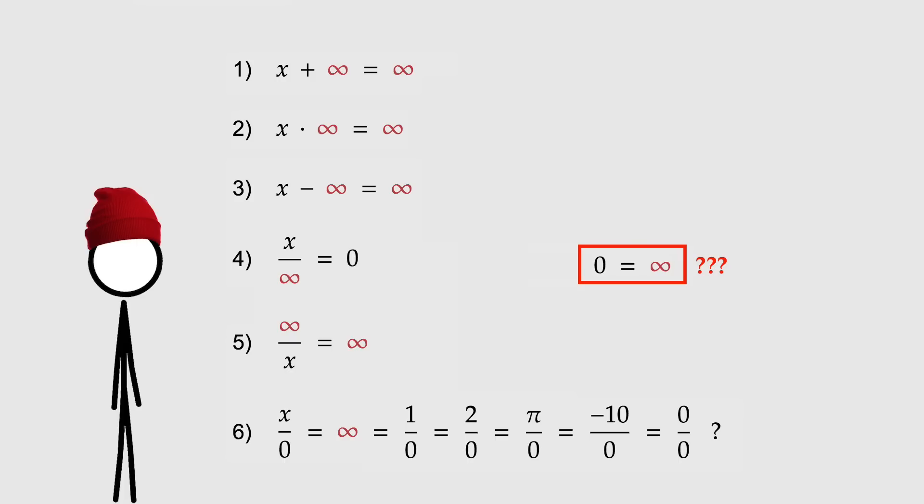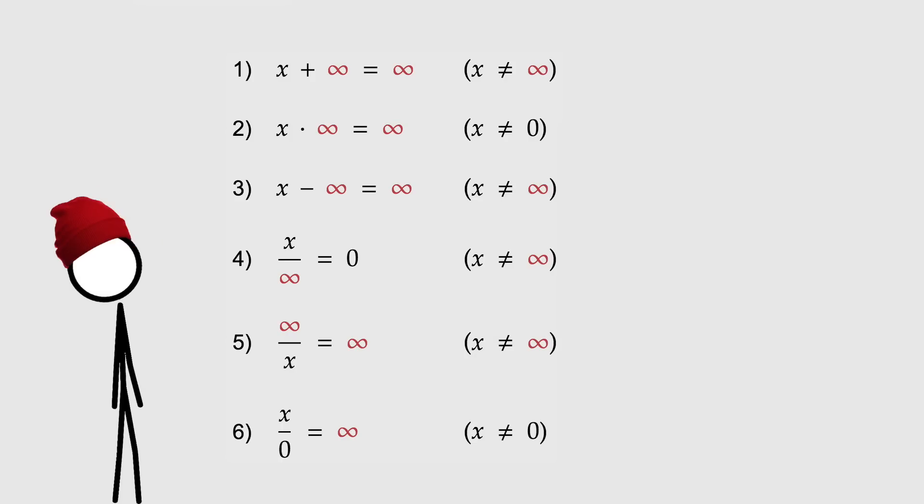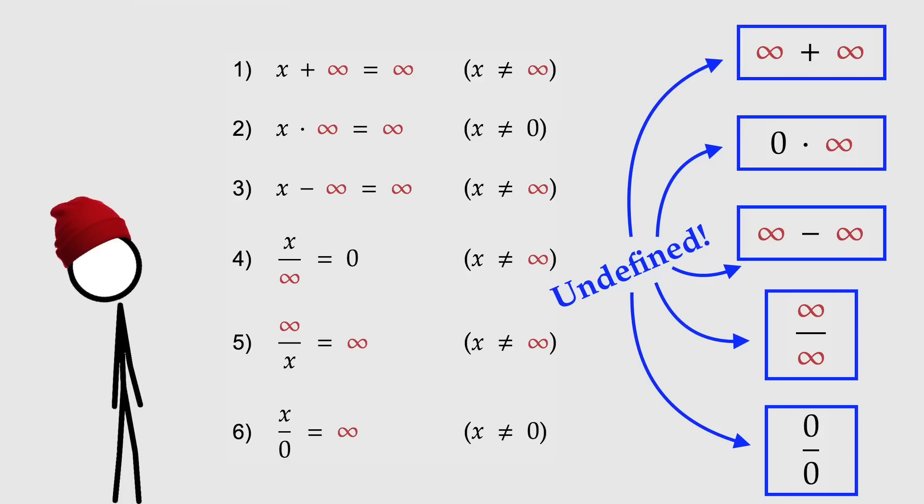The exceptions. So these six definitions all have exactly one exception each. For number two and number six, exception is when x equals zero. And for the remaining ones, exception when x equals infinity. Yeah, or in other words, what this really means is each of these expressions over here is undefined. Infinity plus infinity, zero times infinity, infinity minus infinity, infinity divided by infinity, and zero over zero.